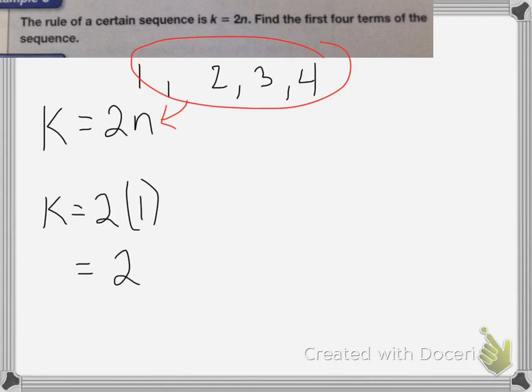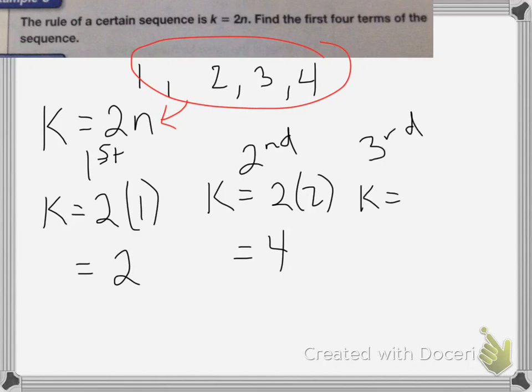The second term is going to be k = 2 × 2, which equals 4. Okay, so that's my first term, second. Okay, my third term will be k = 2 × 3, which is equal to 6.